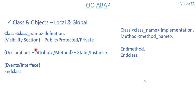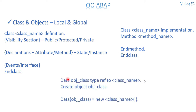To access the properties of the class, you create an object. The syntax is: DATA object_name TYPE REF TO class_name, and then CREATE OBJECT object_name. These are two statements to declare and instantiate the object. With the new syntax, you can also write: DATA(object_name) = NEW class_name( ). Both approaches work. Once you have the object, you can access the class properties using the object reference.